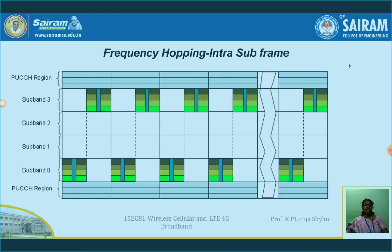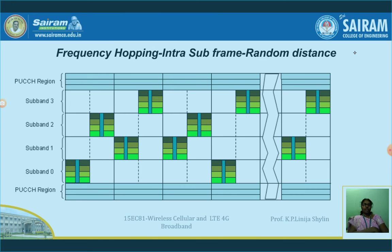Next, we will see another type of hopping. You may recognize this is a kind of intra-subframe hopping in a previous pattern, but you would see that the hopping distance between one slot and another slot is not constant — it may look as if the distance is arbitrary. In the first subframe, frequency hopping happens from subband 0 to subband 2. Here you see subband 0 to subband 3. There is no equal distance — the distances are in a random way. We call this random distance hopping.